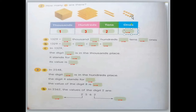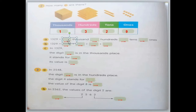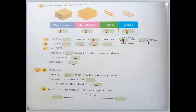Counting the ones: 1, 2, 3, 4, 5, 6, 7, 8, 9 — so we have 9. So we write down here: the digit for the thousands is 1, the digit for the hundreds is 3, the digit for the tens is 2, and the digit for the ones is 9.